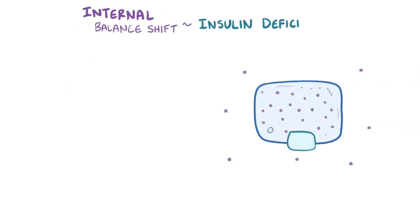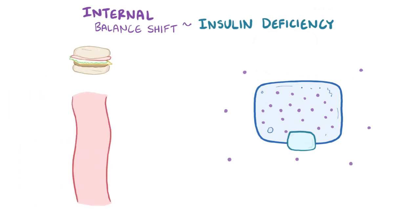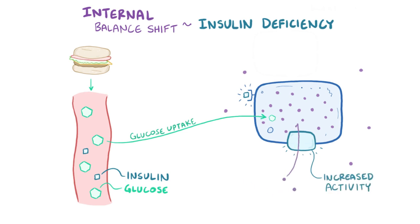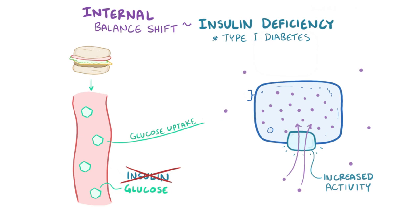One potential cause of an internal potassium balance shift is insulin deficiency. After a meal, glucose increases in the blood and insulin is released, which binds to cells and stimulates glucose uptake. Insulin also increases the activity of the sodium-potassium pump, pulling potassium into cells. People with type 1 diabetes don't make enough insulin, so when they eat a meal, especially one with a lot of potassium, that potassium sits in the blood instead of being taken into cells, causing hyperkalemia.